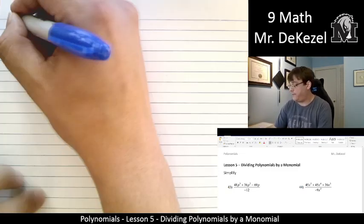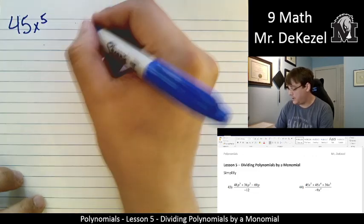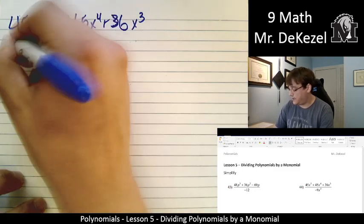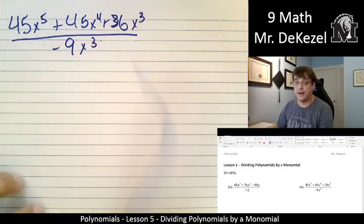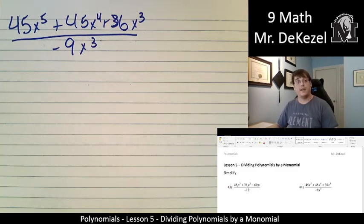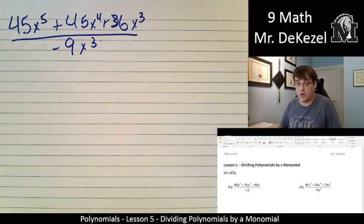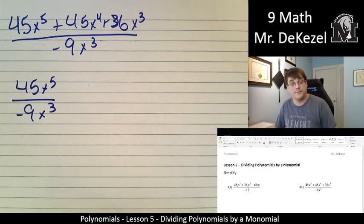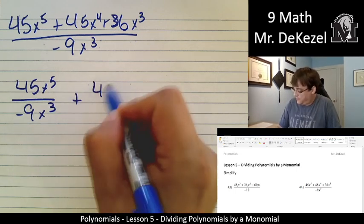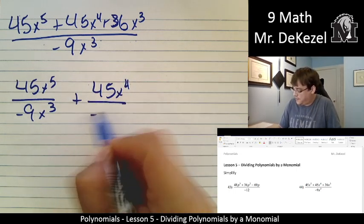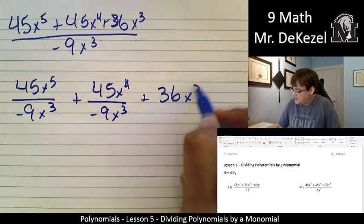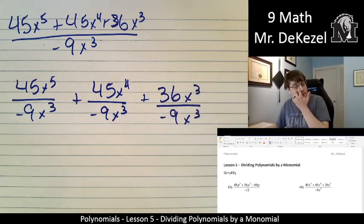Let's go over one. We have 45x⁵ + 45x⁴ + 36x³, all divided by -9x³. We're going to break this up into three different parts with three different division problems. So that's 45x⁵ divided by -9x³, plus 45x⁴ divided by -9x³, plus 36x³ divided by -9x³. We're going to go ahead and treat these like their own individual problems.